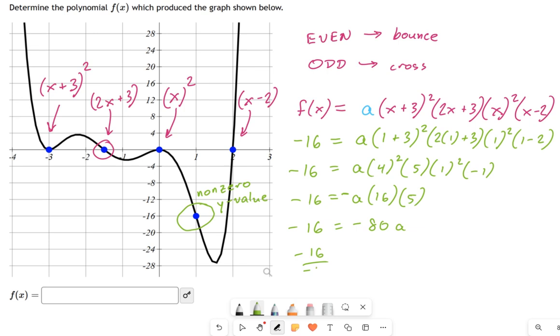Or in other words, negative 16 over negative 80 equals a. So now you can say, well, that means my a equals 1 over 5. And that number, that 1 over 5, is not the answer to the whole problem. But you would plug that back in the beginning, right? Where it said a in the beginning, you would now stick 1 over 5.